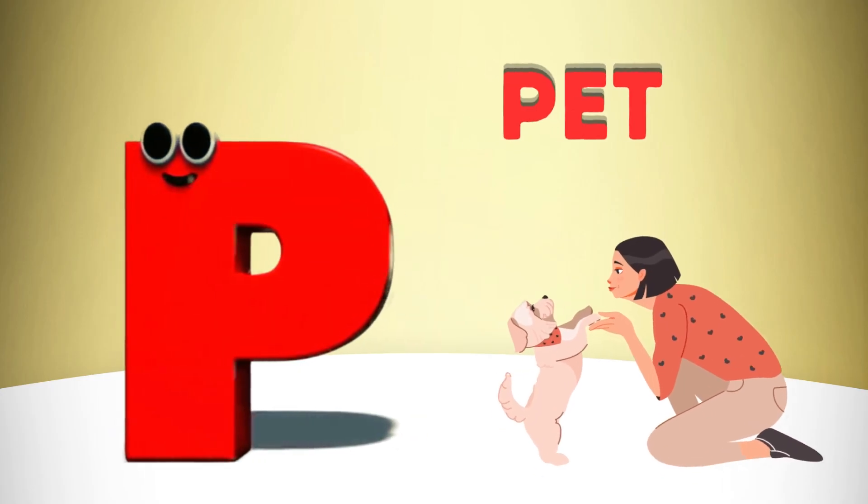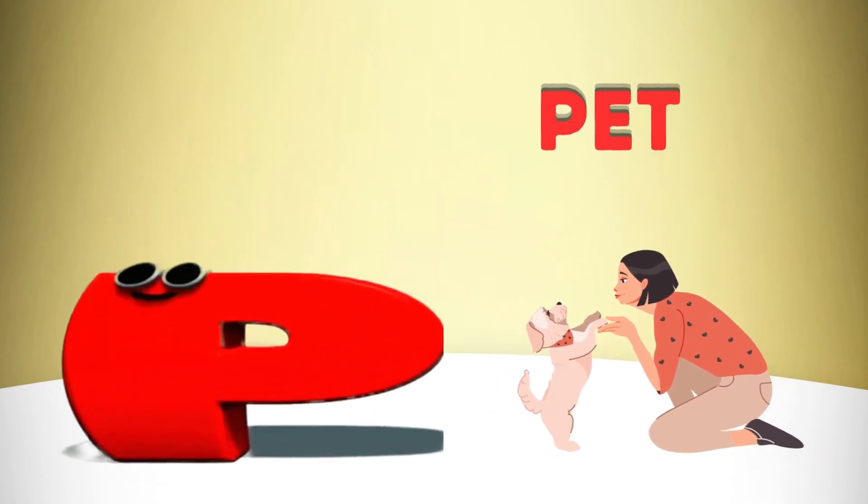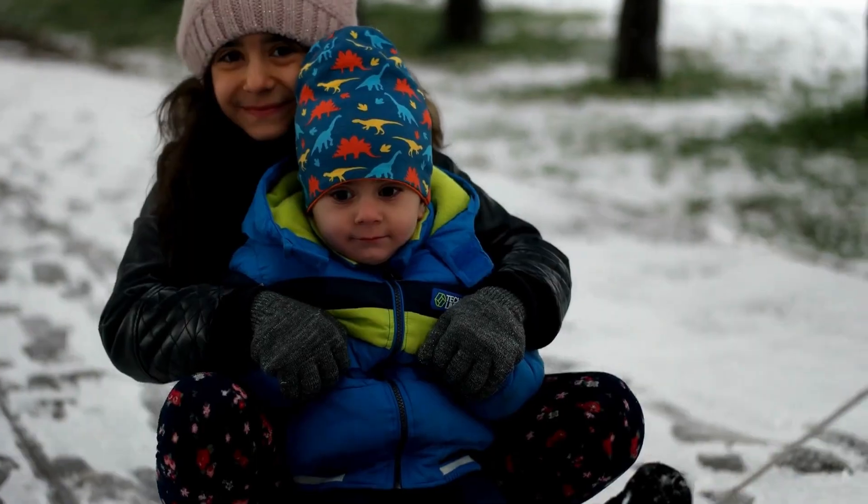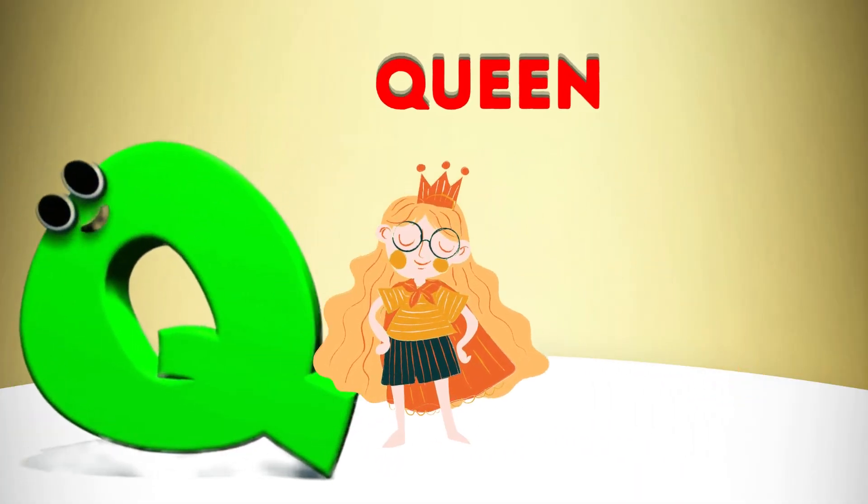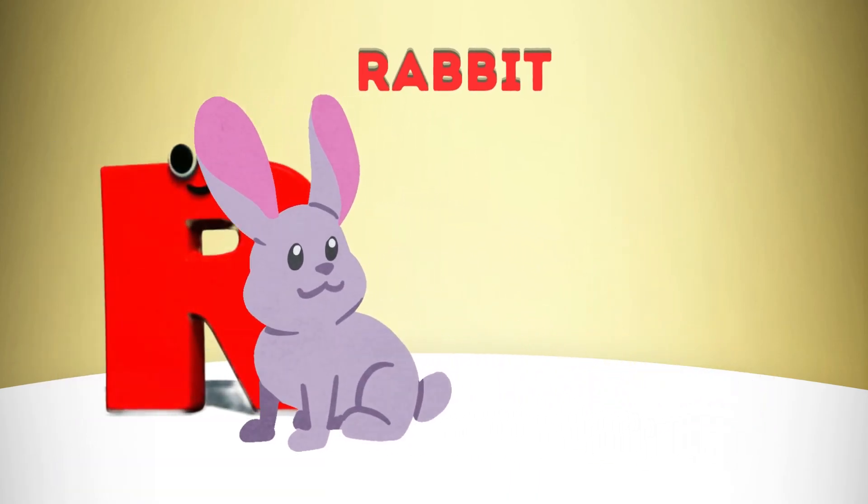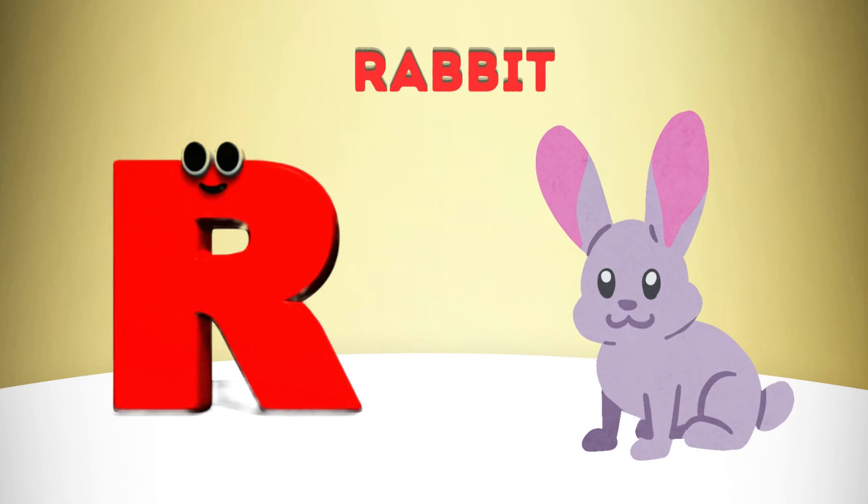P is for Pet, P-P-Pet. Q is for Queen, Q-Q-Queen. R is for Rabbit, R-R-R-Rabbit.